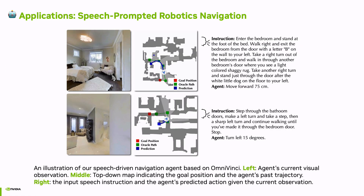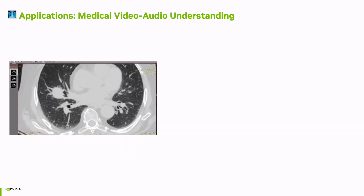OmniVinci can also power robots for speech-guided navigation. With just a spoken prompt, the robot can listen, observe its surroundings, and navigate autonomously.